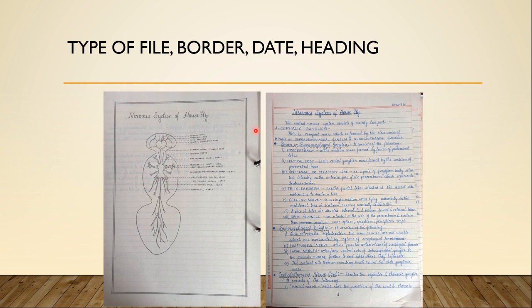Now let us talk about the right side, where you write the description of what you have done. It can be an observation, a protocol of an experiment, or the findings of your experiment. On this side, you should put the date. You can see that this file has a very old date — that is because this is my own personal file and I passed my MSc many years ago.